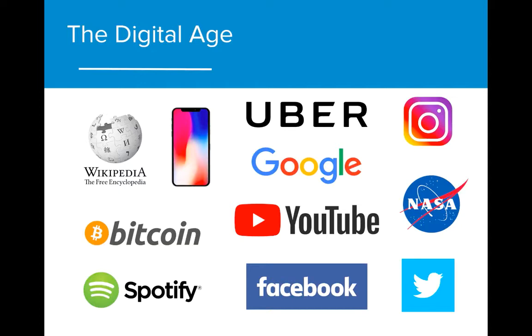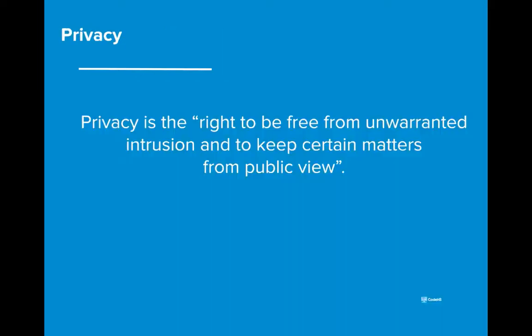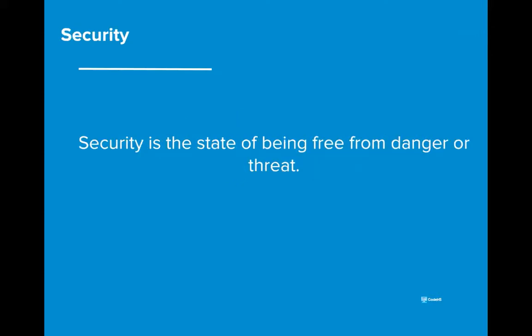Let's first get clear about what privacy and security actually are and what they mean to us. According to the Oxford Dictionary of Law, privacy is the right to be free from unwarranted intrusion and to keep certain matters from public view. Security is the state of being free from danger or threat — the warm, fuzzy feeling we have when we don't have to worry about feeling threatened by harm from others or things in the world around us.